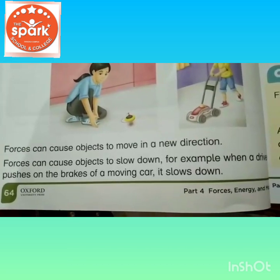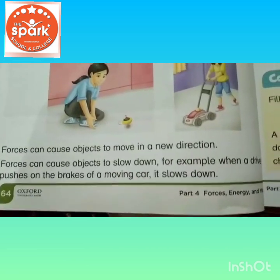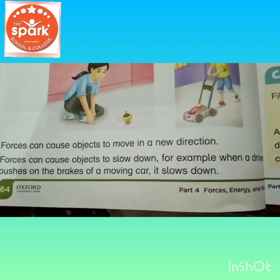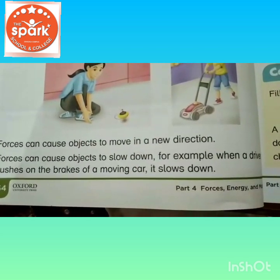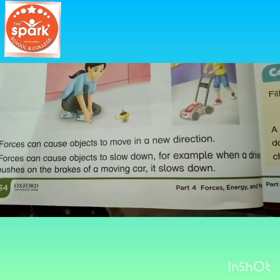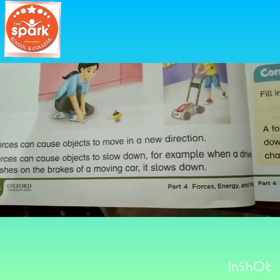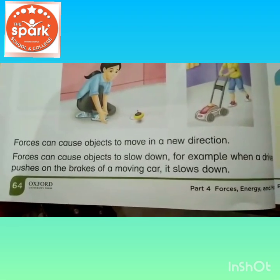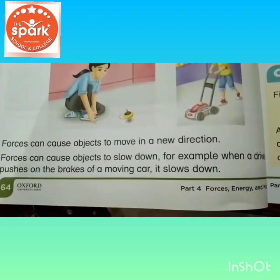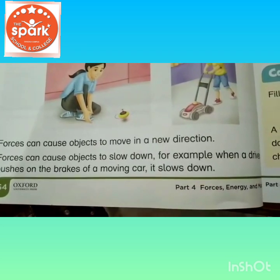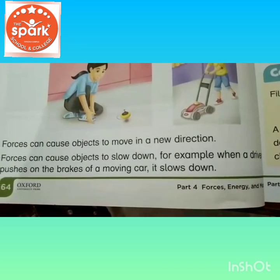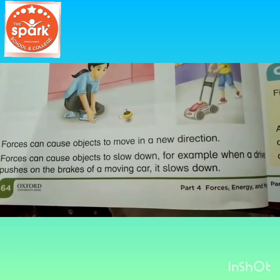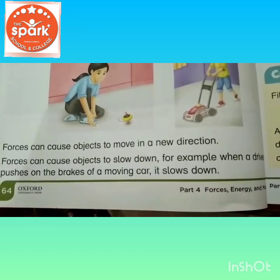Forces can cause objects to slow down — forces chizho ko aista karne mein. For example, koi chiz hai woh ball hai bhot tezi se ja rahi hai, lekin aap usko slow ker sakte ho. For example, when a driver pushes on the brakes — jab aap car bhot tez chal rahi hai aur usko aap uski brakes pe rokoge, toh woh slow ho jayegi.